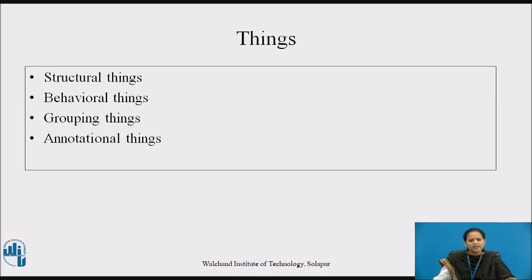There are four kinds of things in UML: structural things, behavioral things, grouping things, and annotational things.